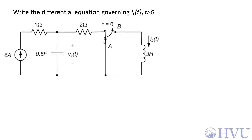We want the differential equation governing the inductor current I sub L of t for t greater than zero for this circuit. We have two energy storage elements: a 0.5 Farad capacitor and a 3 Henry inductor. At t equals zero, the switch moves from position A to position B, so for t greater than zero, the switch is in this position.